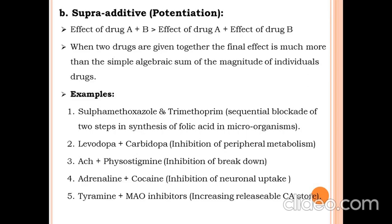More supra-additive examples: levodopa and carbidopa — this combination is most useful in Parkinson's disease as it inhibits the peripheral metabolism of L-DOPA. Acetylcholine and physostigmine — used for inhibition of the breakdown of acetylcholine, which increases acetylcholine concentration in neurons. Adrenaline and cocaine — used for inhibition of neuronal uptake, increasing adrenaline concentration in adrenergic neurons. Tyramine and MAO inhibitor — this increases the releasable catecholamine storage.